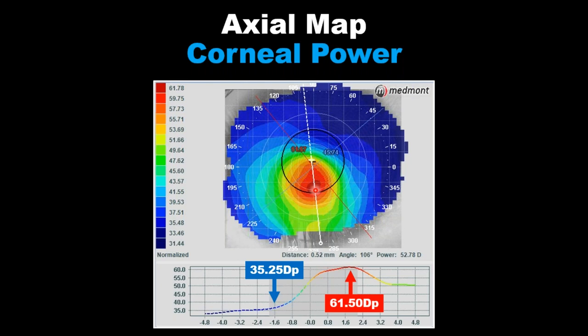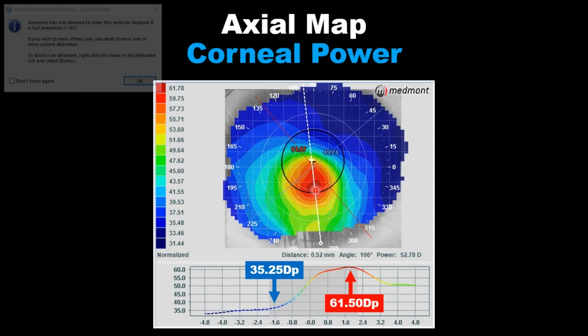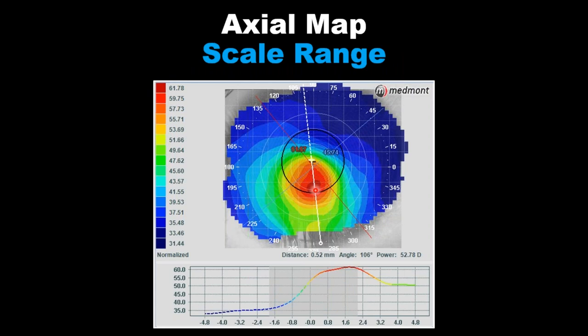La parte grisácea en la gráfica inferior vemos de 60 a 35 — es un mapa normalizado. El punto más curvo es 61.78, el más plano 31.44. Fíjense en la pupila: miren todos los poderes que caen dentro de ella. Dentro de esa pupila tenemos 61.50 como punto más curvo y 35.25 como punto más plano en términos de poder — una diferencia de 26 dioptrias entrando la luz por esa pupila.